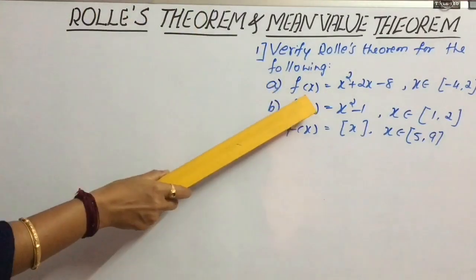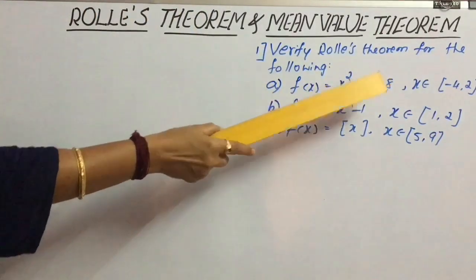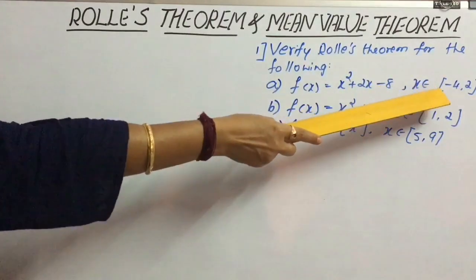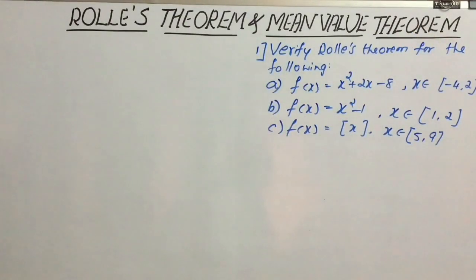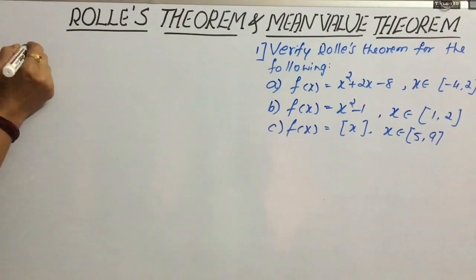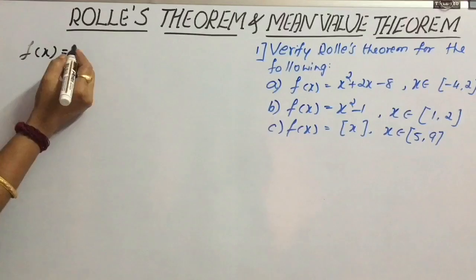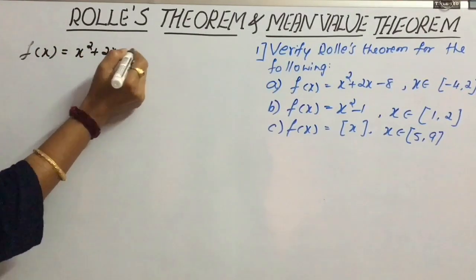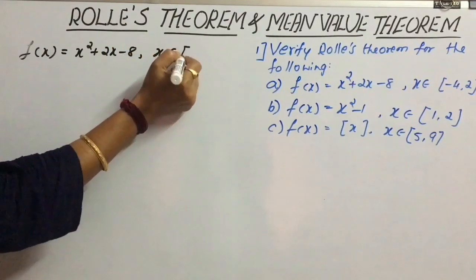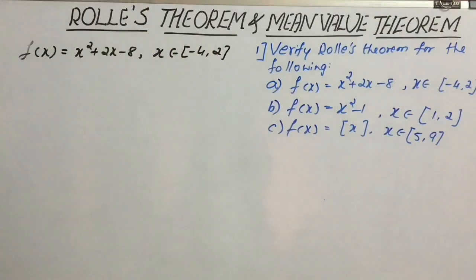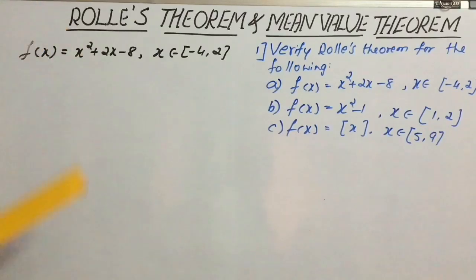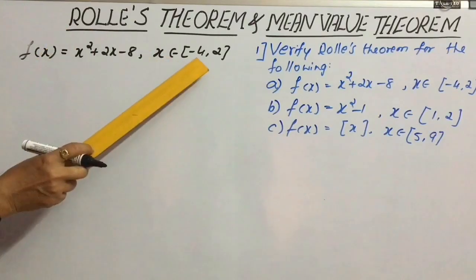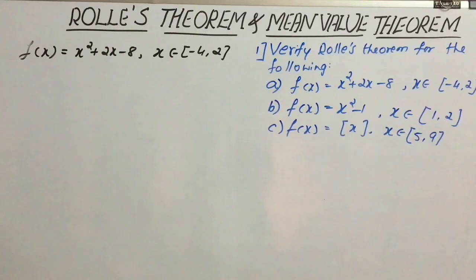In the first question, f(x) = x² + 2x − 8, where x belongs to the closed interval [−4, 2]. We know that f(x) is a polynomial and it is continuous over the closed interval [−4, 2] and differentiable over the open interval (−4, 2).